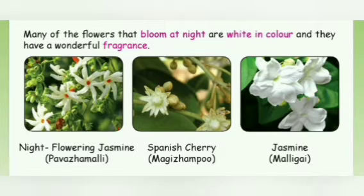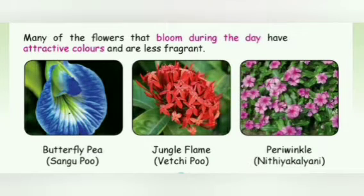Examples of night-blooming flowers include: night-flowering jasmine, also called paavera malli; Spanish cherry, also called murukkampu; and jasmine, called malligai. Similarly, few flowers bloom during the daytime — they have attractive colors but less fragrance. Examples are butterfly pea, also called sangu poo, and jungle flame, also called vetchipoo.